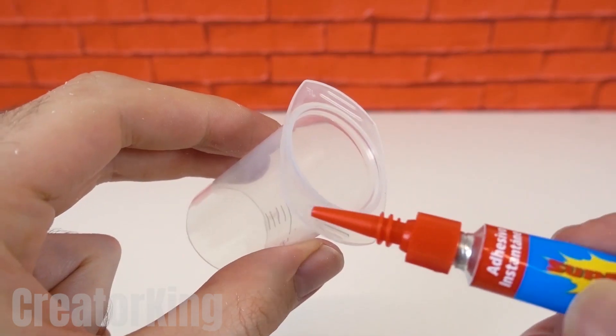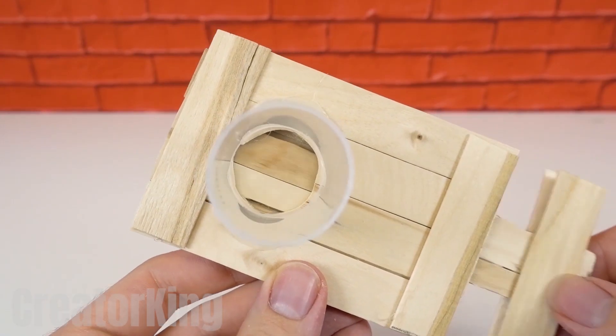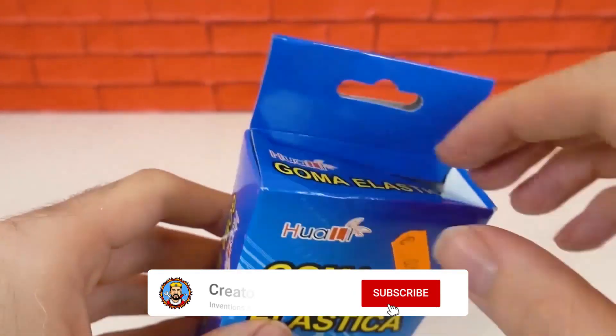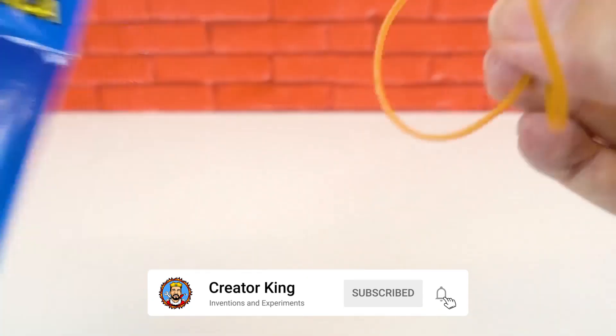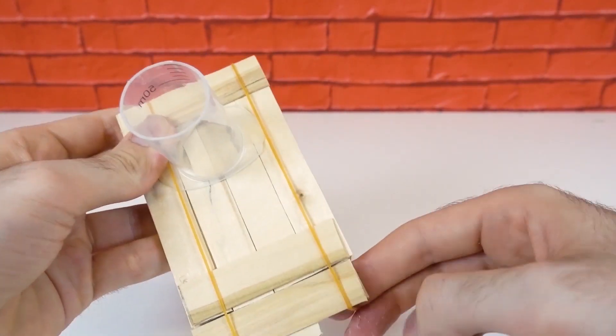You haven't forgot the syringe that we cut off at the beginning, have you? Glue it just above the hole in the structure. Hit a couple of rubber bands which we'll place on the longer sides of the board. Make sure that they have a good grip on it. They'll take care of firing the coins.